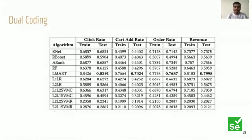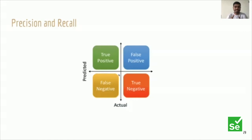Another technique is precision and recall. Out of all predicted results, how many are true positives, false positives, or false negatives? Accuracy is calculated based on the ratio of true positives and false positives against actuals, giving a percentage of how accurate the model is.